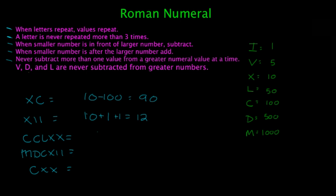CCLXX, you're going to have 100, plus another 100, plus 50, plus 10, plus another 10. And that's going to give you 270. Now, MDCXXII is a little more challenging just because it has to do with larger numbers. That's going to be 1,000, plus 500, plus 100, plus 10, plus 1, plus 1. And that's going to give you 1,612.